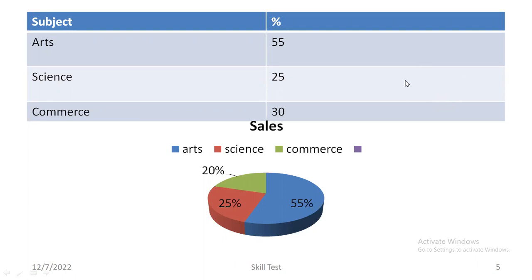Now, you can see one slide in front of you. What you can see here is one table, and below the table is one pie chart. The pie chart shows the percentage-wise distribution.